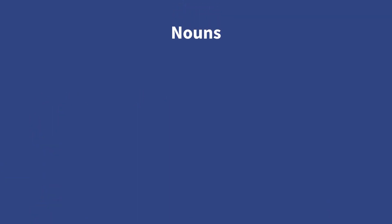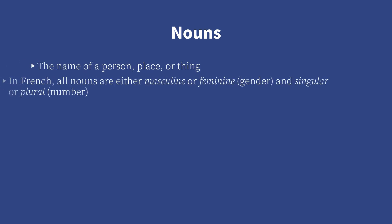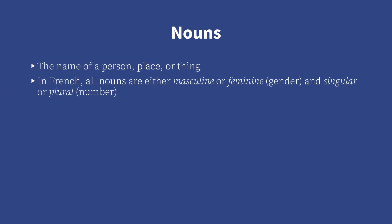Nouns. We all know that a noun is the name of a person, place, or thing. In French, all nouns are either masculine or feminine — that's their gender — and singular or plural — that's their number.